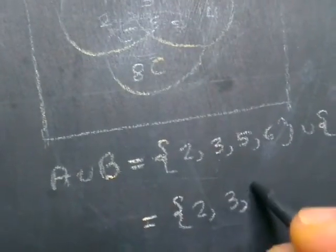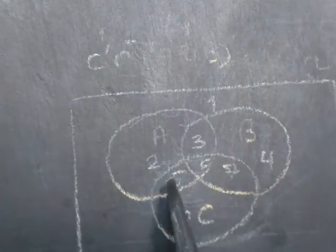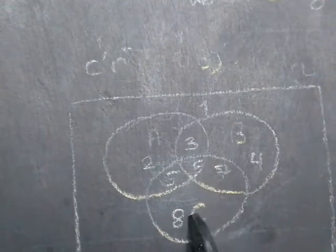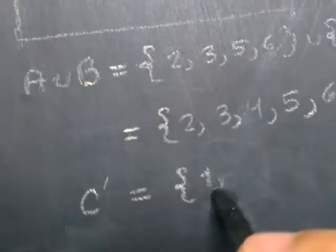A union B contains regions 1, 2, 3, 4, 5, 6, 7. Next, C complement — outside C from the universal set. C has regions 5, 6, 7, 8, so C complement is regions 1, 2, 3, 4. C complement, or C prime, is the set of regions 1, 2, 3, and 4.